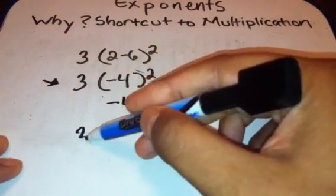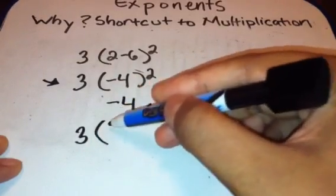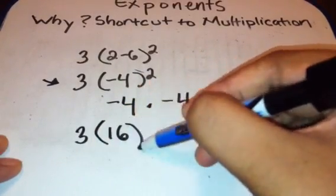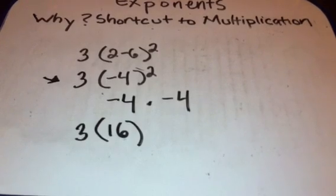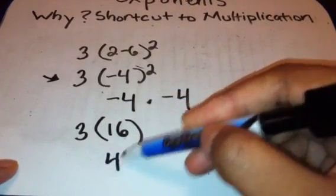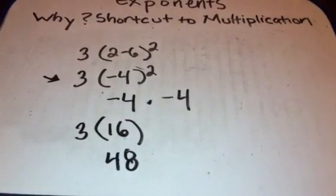We're still not done though. We have a 3 times that 16. And 3 times 16 is 48. 48 is your final answer here.